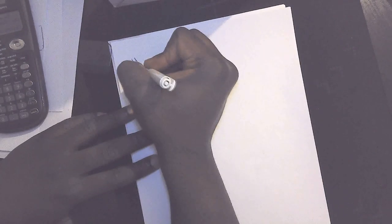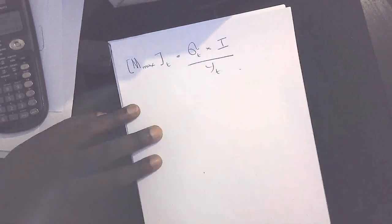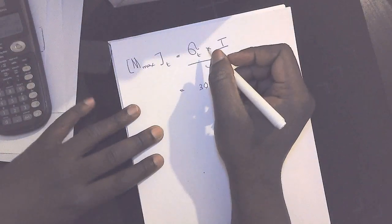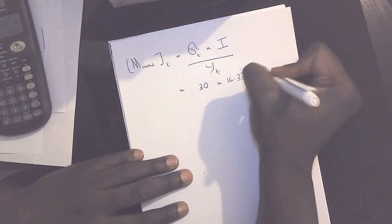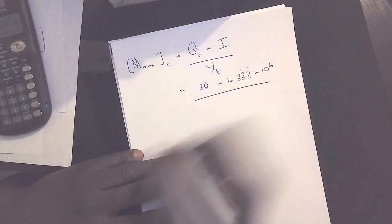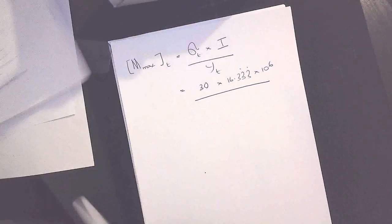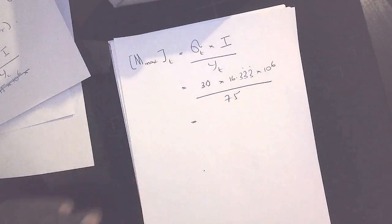So we're going to calculate the bending moment for the section of beam under tension. So M max T is equal to sigma T times I divided by Y T. This is equal to 30, that's the value we're given from the problem, times 16.333 times 10 to the power of 6, divided by Y T, and the value of Y T we worked out to be 75.